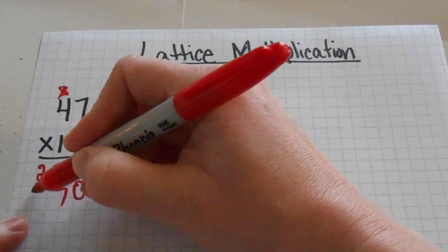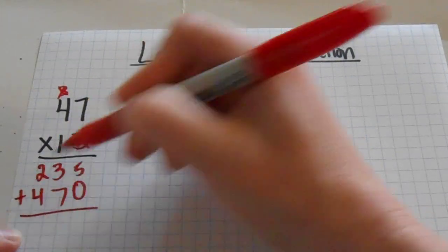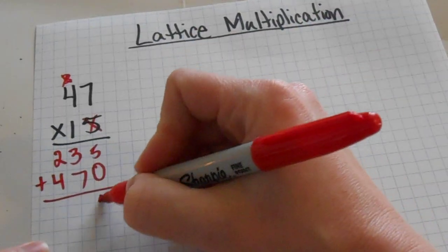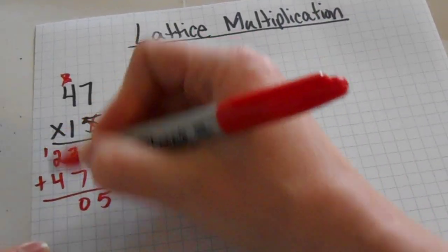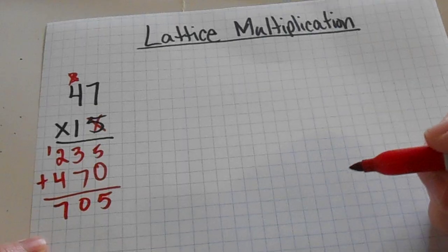1 times 7, 1 times 4. And then add it all up together. And come up with 705. So now we're going to learn how to do the lattice multiplication.